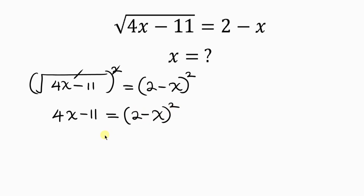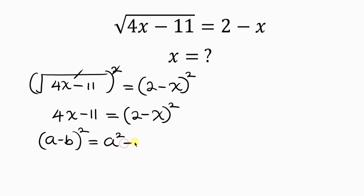Our next step will be to expand the right-hand side. Notice that the right-hand side is of the form (a minus b) squared, which is expanded as a squared minus 2ab plus b squared.